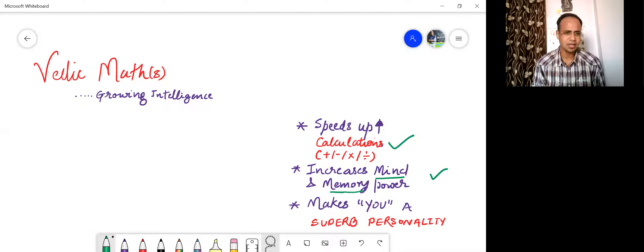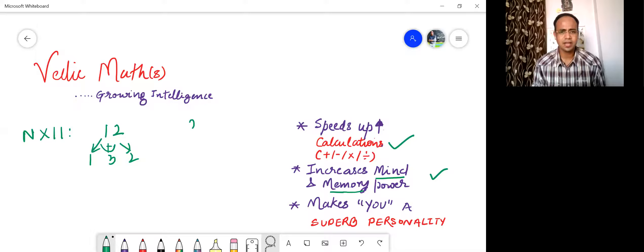For example, any number multiplied by 11 would be like this: suppose 12 by 11, this is one, this is two, one plus two is three, so 123. 23 by 11, this is two, this is three, and two plus three is five, so 253. Isn't that wonderful?